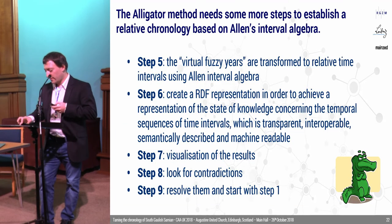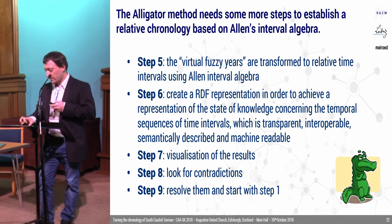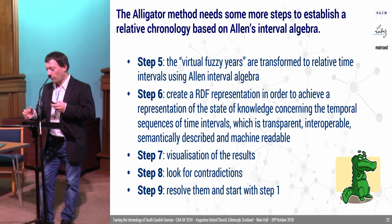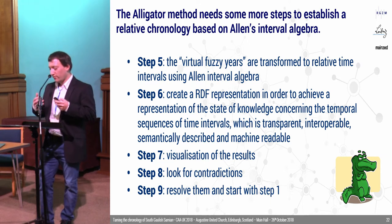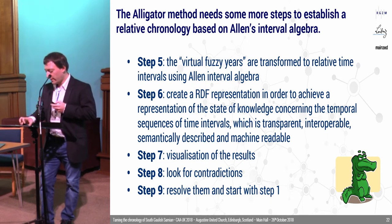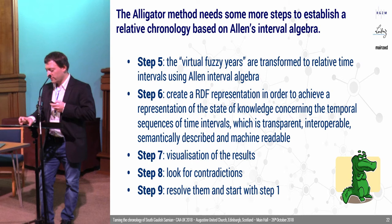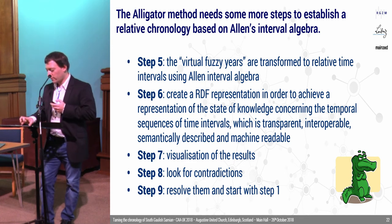There are some more steps in the Alligator, because the method needs more things to establish a relative chronology based on Allen's interval algebra. In step five, the virtual fuzzy years are transformed to a relative chronology according to Allen's interval algebra. After that in step six, we create an RDF representation to make things transparent, interoperable, and semantically described and machine readable. In step seven, we can visualize the results. And in step eight, we look at contradictions and start from the beginning again.